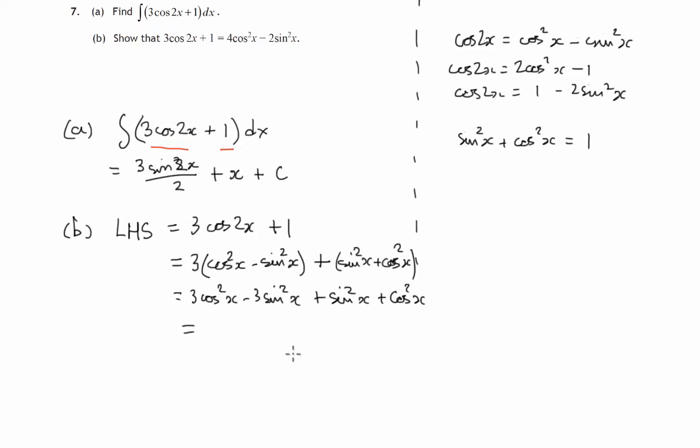So let's gather up the cos²x. There's three of them here plus another one here, that's four cos²x minus three sin²x plus one sin²x would be minus two sin²x, and that indeed is the right hand side of that identity. So we've solved it.